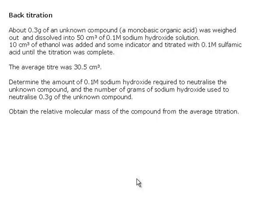Back titration. About 0.3 grams of an unknown compound, which is a monobasic organic acid, was weighed out and dissolved in 50 cm³ of 0.1 M sodium hydroxide solution. Notice this word 'about' - it means it's not exactly 0.3 grams, so we don't really know what mass is being weighed out.